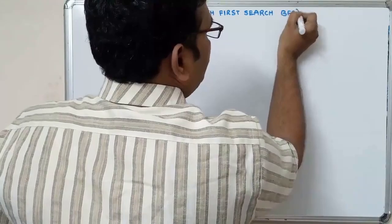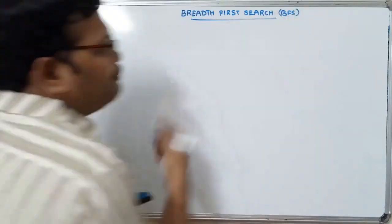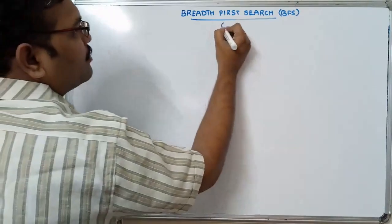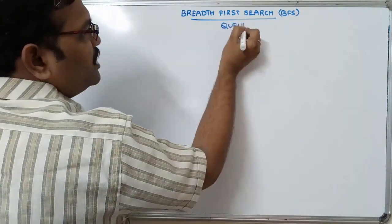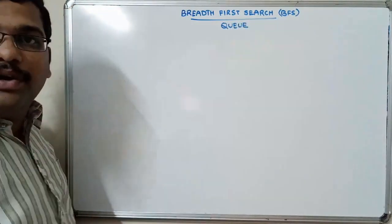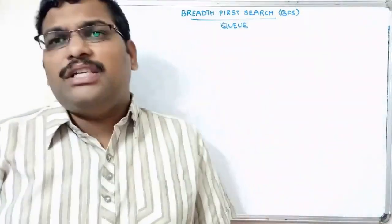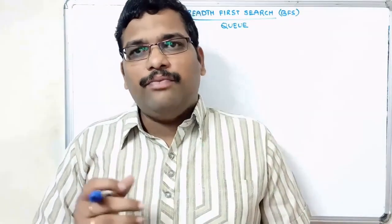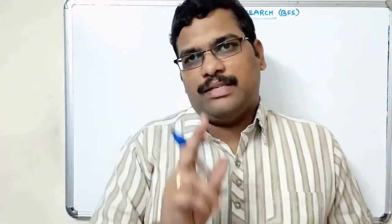This is called BFS. In order to implement BFS we use the queue data structure, which is a first-in first-out queue. We will take the same example and follow the same procedure. We have to visit all the nodes only once. We can assume the start from any node and travel to visit all the nodes only once.